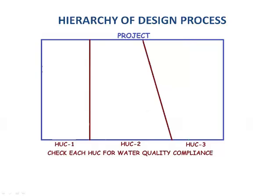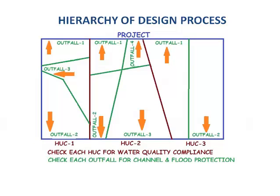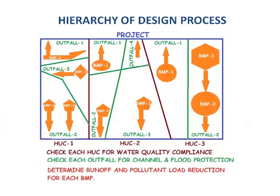In summary, a project can have many hydrologic unit boundaries. Each hydrologic unit boundary will need to be checked for water quality compliance. Each HUC can have a number of outfalls where the project runoff leaves the right-of-way, and each outfall will need to be checked for quantity compliance for channel and flood protection. Each outfall may require many BMPs or there may be no BMP. Performance of each BMP needs to be analyzed both for runoff reduction and pollutant load reduction, and proper design of each facility is also required. SMSOFT VA guides you through this entire design process.